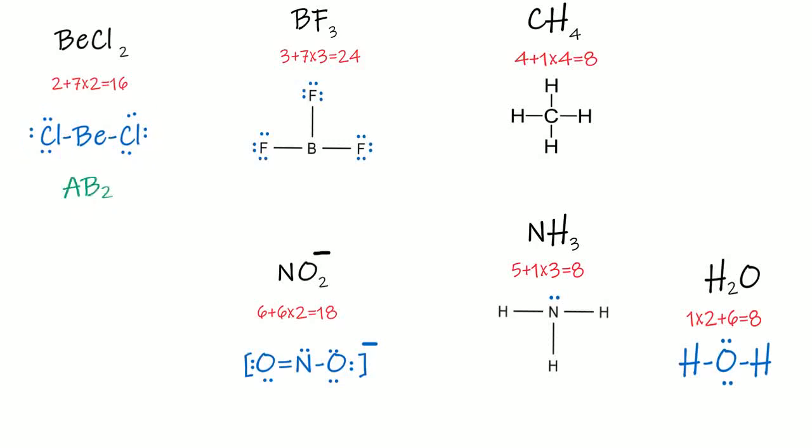What is the type of BF₃ molecule? It is AB₃. The type of methane molecule? It is AB₄.